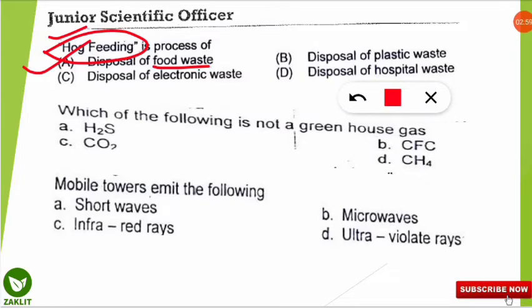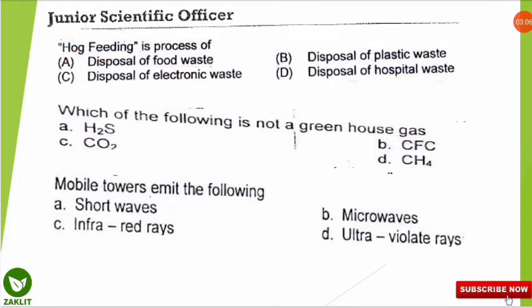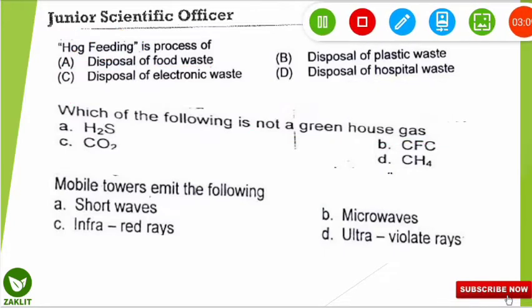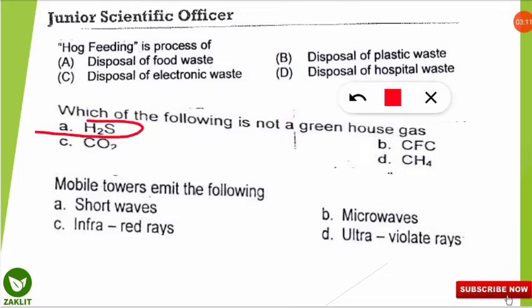The next question is very easy. The question is: which of the following is not a greenhouse gas? The correct option is A — H2S, hydrogen sulfide, is not a greenhouse gas, but CFCs, methane, and carbon dioxide are greenhouse gases.